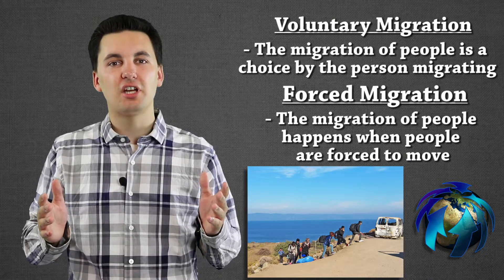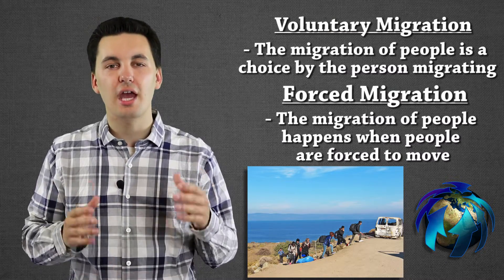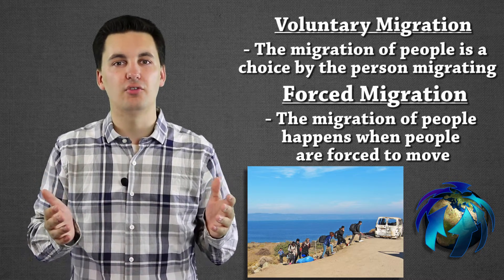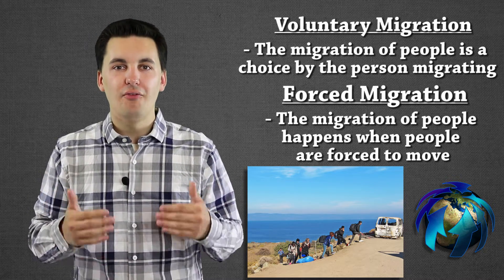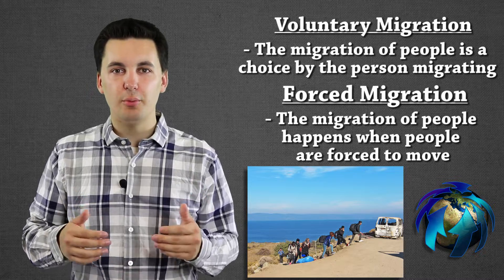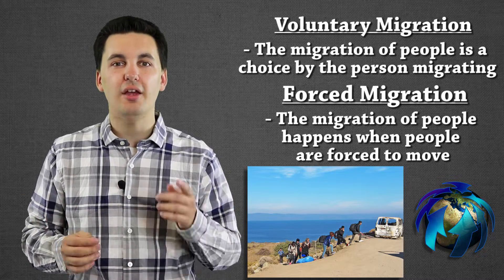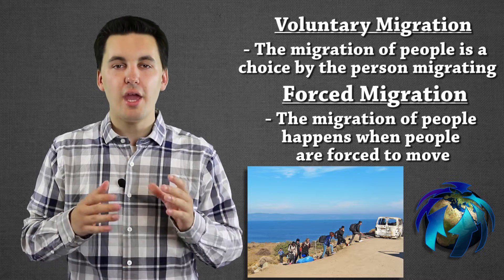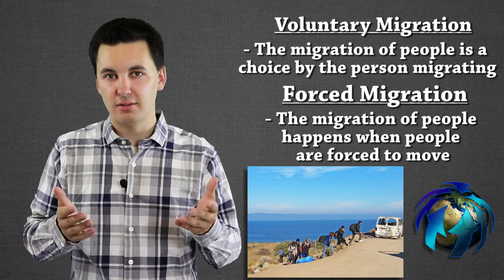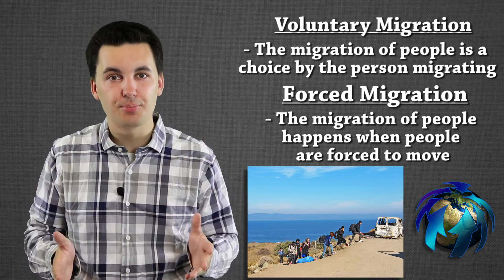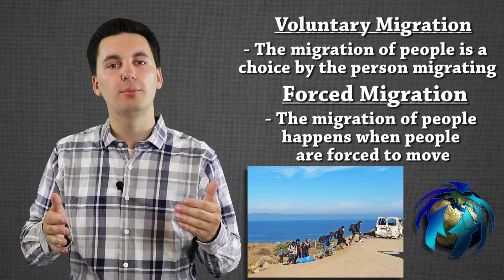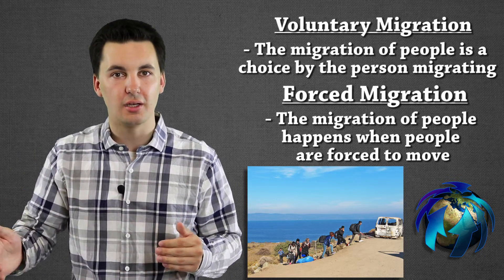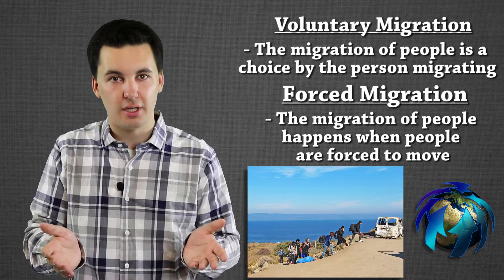Our first two migration types are voluntary and forced migration. Voluntary migration is when someone decides that they want to move somewhere and they are also deciding where they want to move to. They are the ones making the decisions — they have options, they get to decide that they want to move and that they want to go to place B or C.